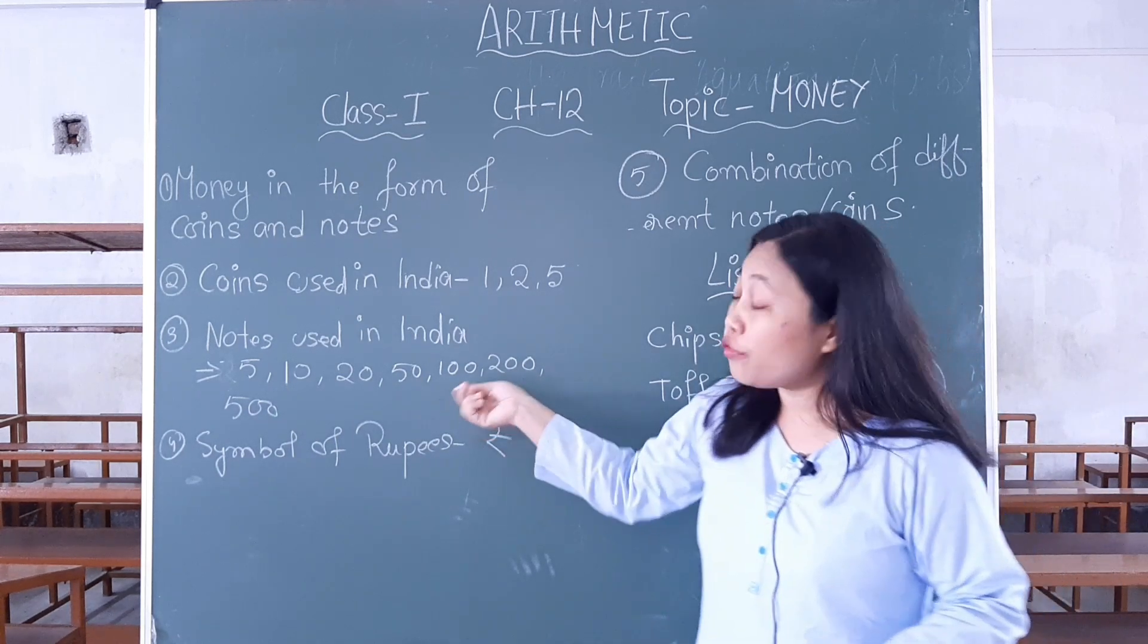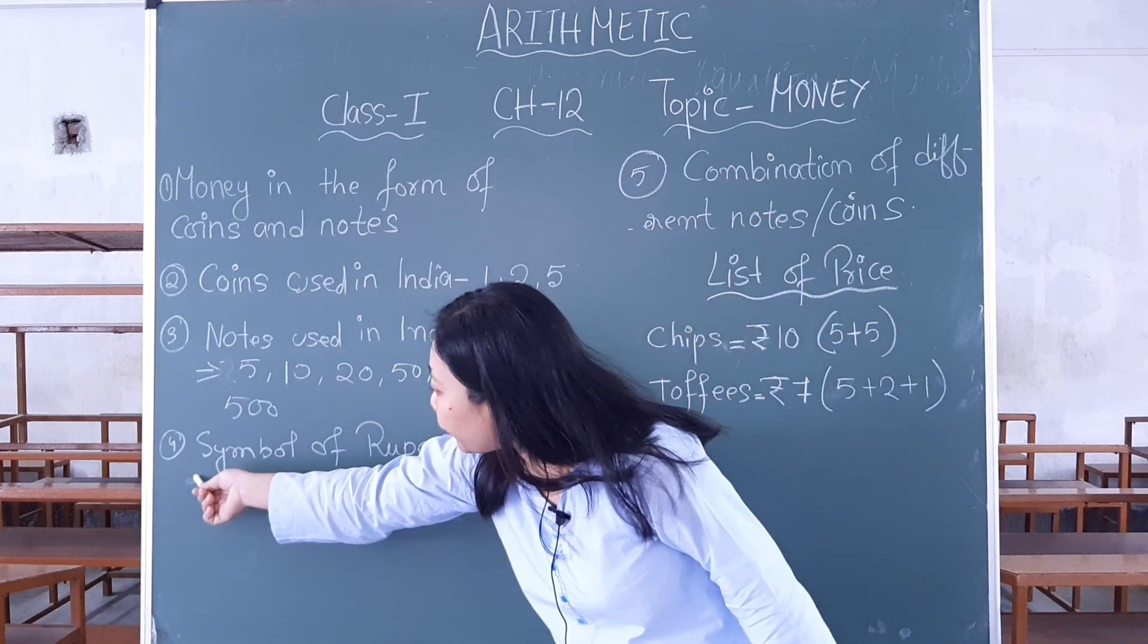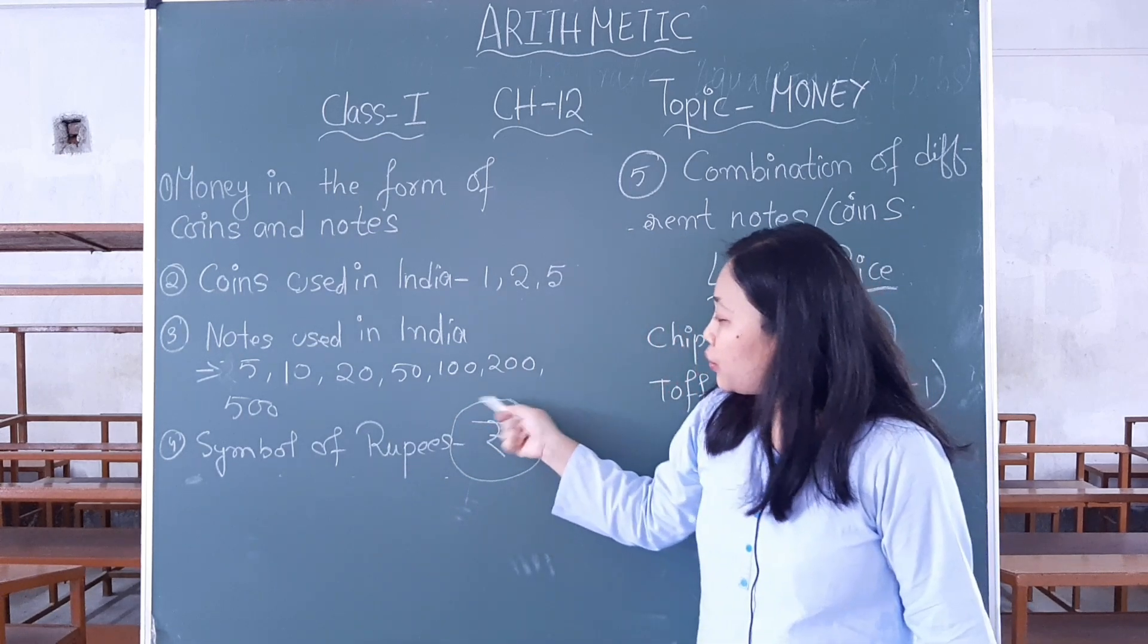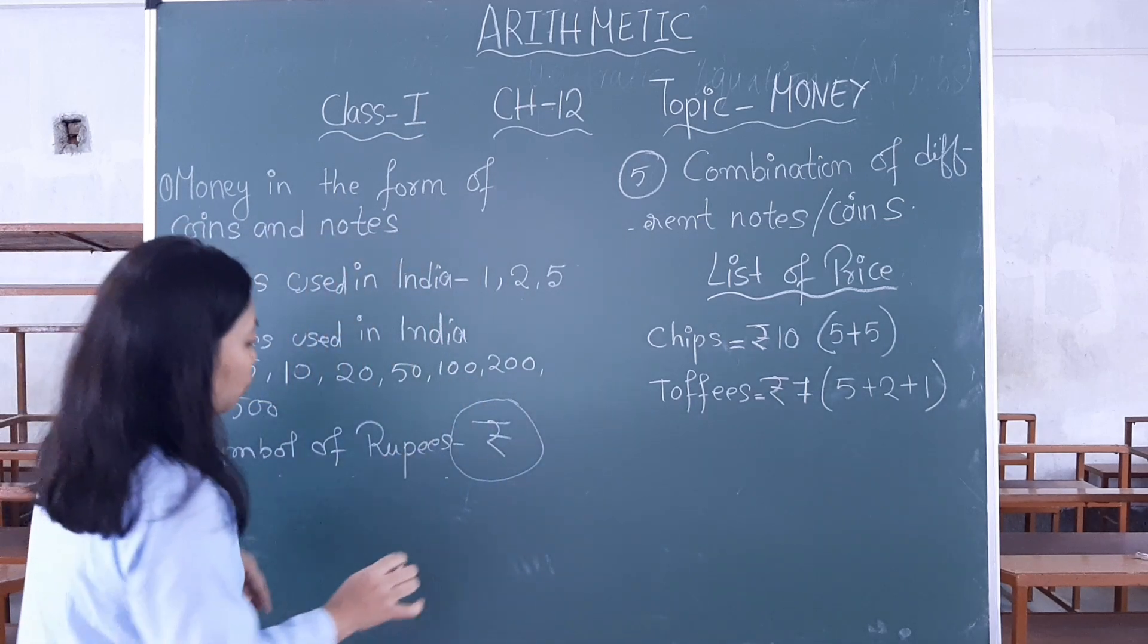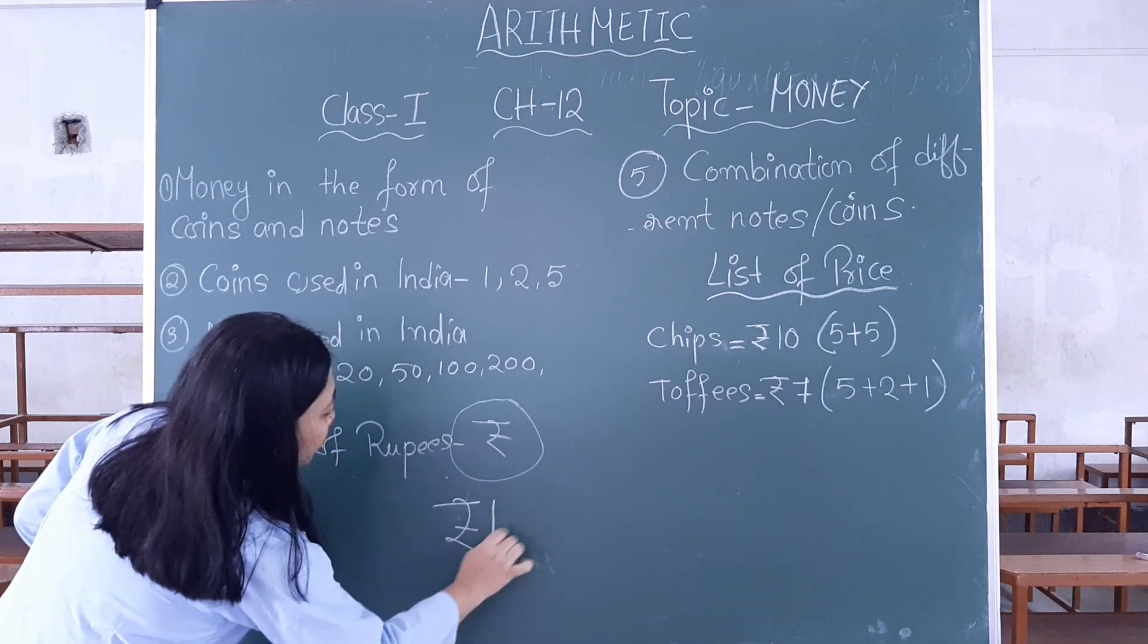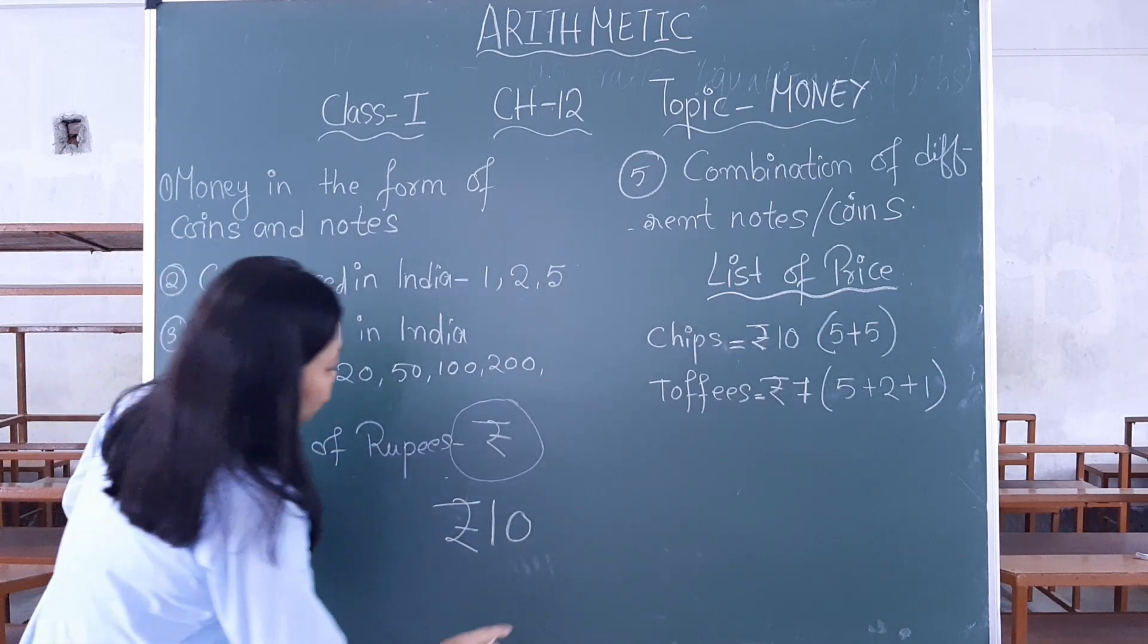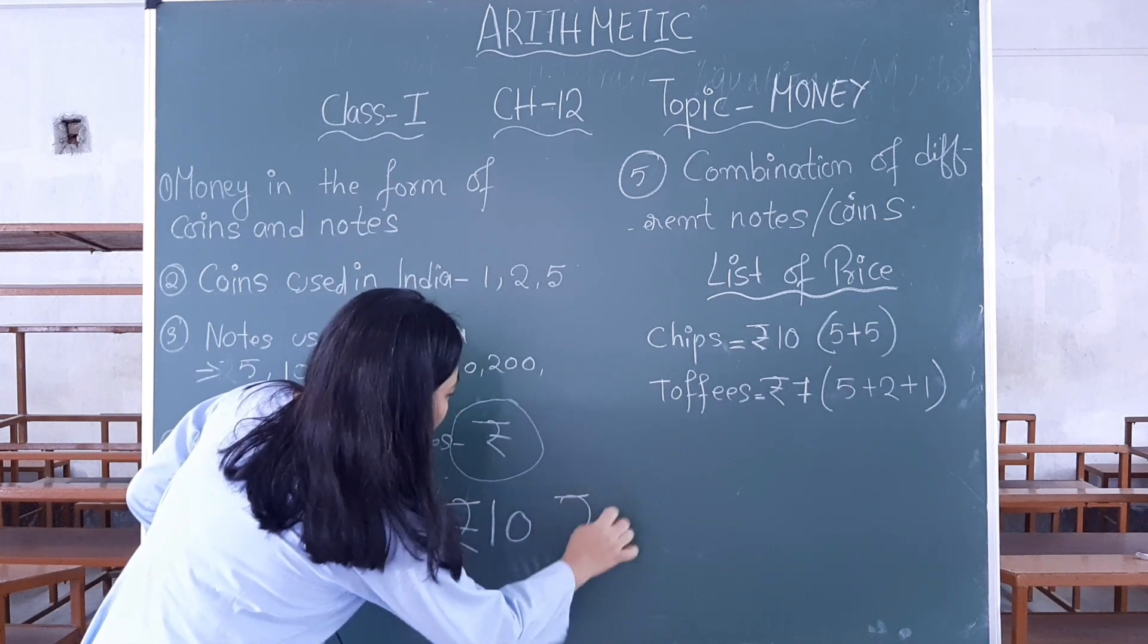Now notes are made of paper. Number 4, symbol of rupees. This is the symbol of rupees. For example, if you want to write 10 rupees note, you write this symbol then 10. For 200 rupees, you write it this way.